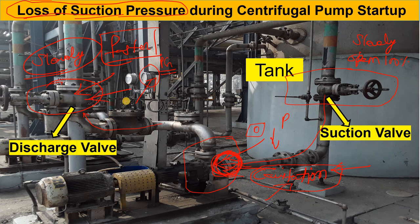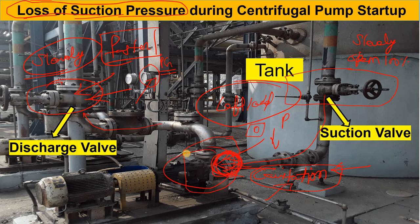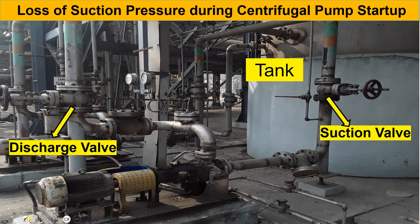If you open the discharge valve faster, the acceleration in the suction line will be greater and the velocity will be high, causing suction pressure to go low. Because of that, your pump could lose its load, run in dry condition, and the internal parts could be damaged. That's why, whenever you are starting the centrifugal pump, please throttle the discharge valve slowly initially, and then open it to 100% gradually.